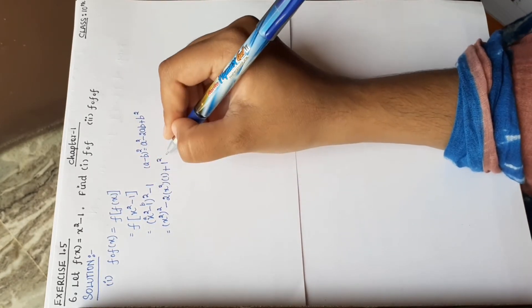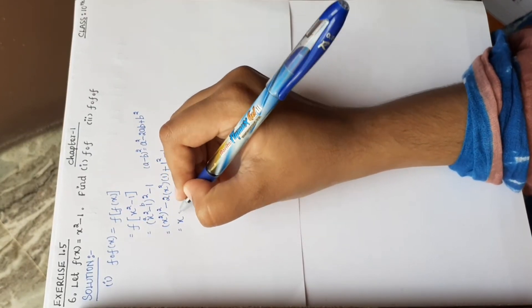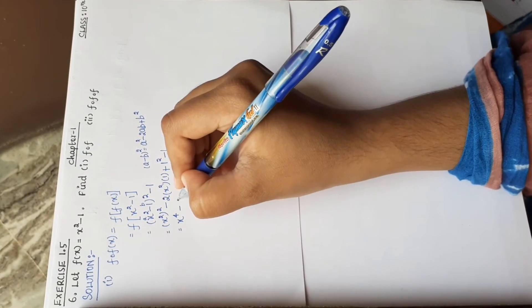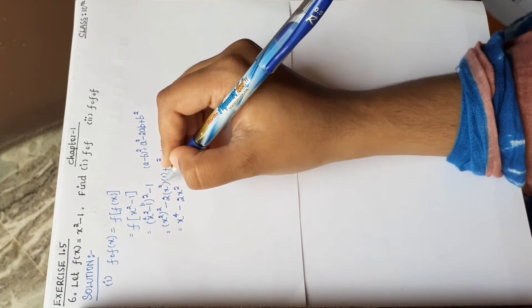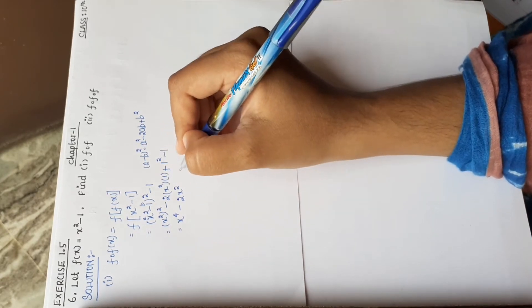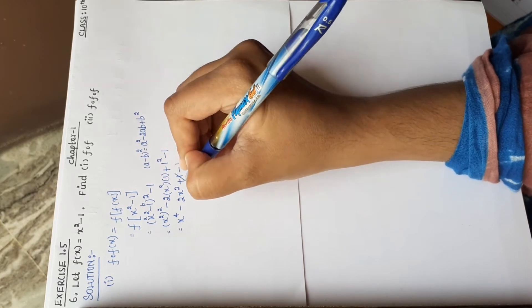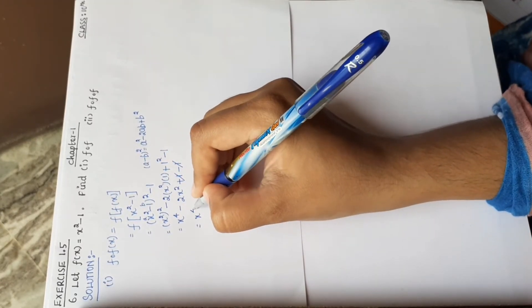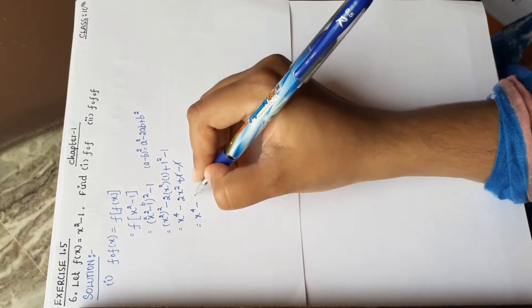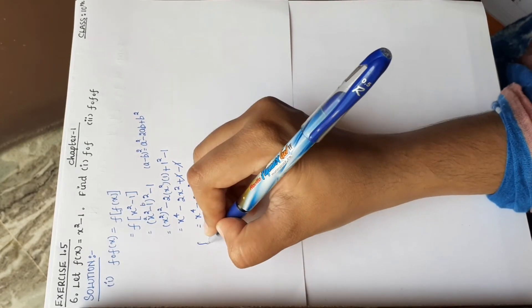Here is minus 1. So now this is x power 4 minus 2 into x squared into 1, which is 2x squared, plus 1 minus 1. The 1s cancel, and we get x power 4 minus 2x squared. So this is f of f.